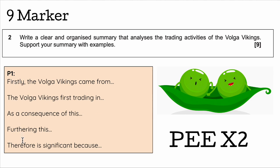Here are some sentence starters for this question. Always try to use the question in your first line — start with things like 'firstly' or 'secondly.' For example: 'Firstly, the Volga Vikings came from...' We also want to use language like consequence, cause, or significance, as these link to historical concepts. Try phrases like 'as a consequence of this,' 'furthering this,' or 'therefore, this is significant because.'